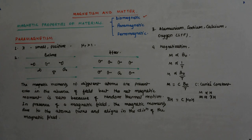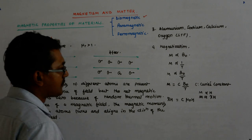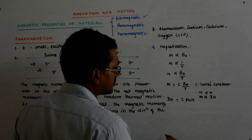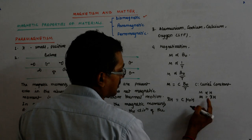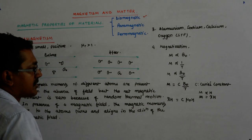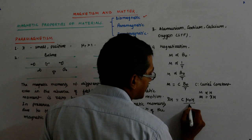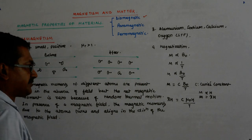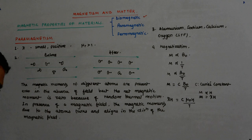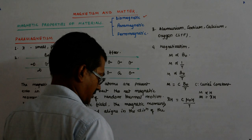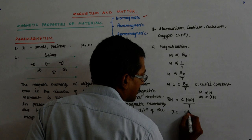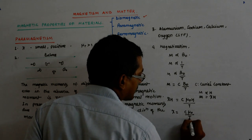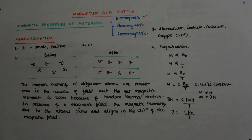Chi H equals C times mu-naught H upon T. So H cancels, and it becomes a relation between chi and T: chi equals C times mu-naught upon T. This is Curie's law.